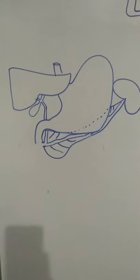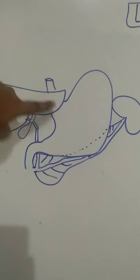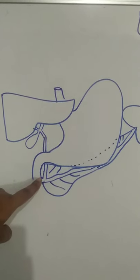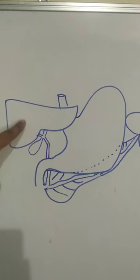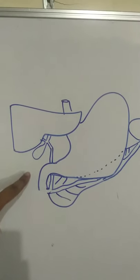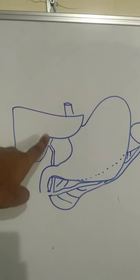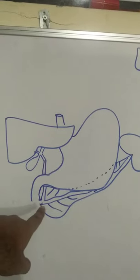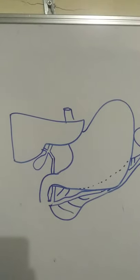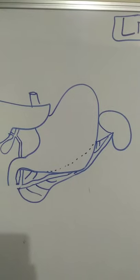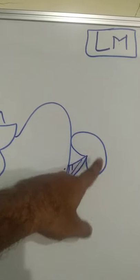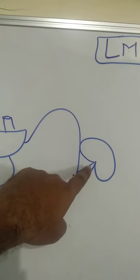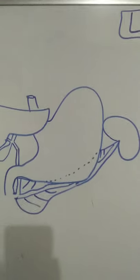To repeat for convenience: the foregut derivatives in the abdomen are the lower end of the esophagus, the stomach, and the duodenum including the first and second parts up to the opening of the common bile duct. In addition, the endodermal derivatives are the liver from the hepatic bud, gallbladder from the cystic bud, extrahepatic biliary apparatus, and the ventral and dorsal pancreatic buds which give rise to the pancreas. The mesoderm forms multiple splenic lobules that join together to give rise to the spleen — if one fails to unite, it forms the splenic notch.